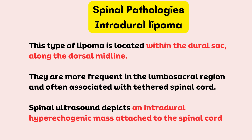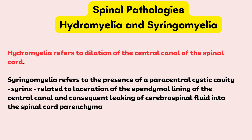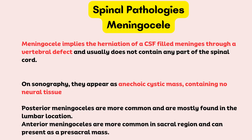Spinal ultrasound depicts an intradural hyperechogenic mass attached to the spinal cord. Diastematomyelia is characterized by the sagittal division of the spinal cord into two symmetrical or asymmetrical hemichords; the lumbar segment is frequently affected, and ultrasound imaging in the axial plane demonstrates the presence of two hemichords. Hydromyelia refers to dilation of the central canal of the spinal cord. Syringomyelia refers to the presence of a paracentral cystic cavity (syrinx) related to laceration of the ependymal lining and consequent leaking of CSF into the spinal cord parenchyma. Meningocele implies herniation of a CSF-filled meninges through a vertebral defect and usually does not contain any part of the spinal cord; on sonography they appear as anechoic cystic masses containing no neural tissue. Posterior meningoceles are more common and mostly found in the lumbar location, while anterior meningoceles are more common in the sacral region and can present as a presacral mass.